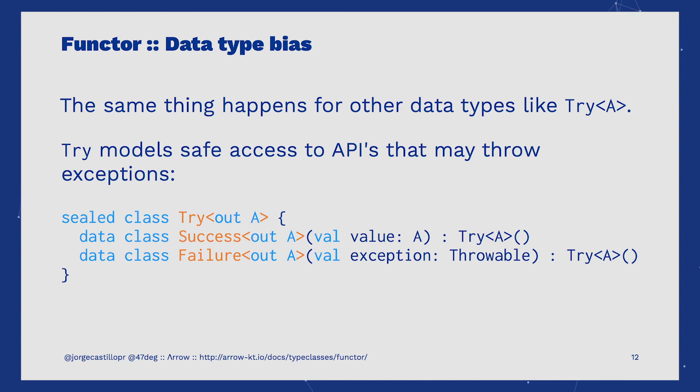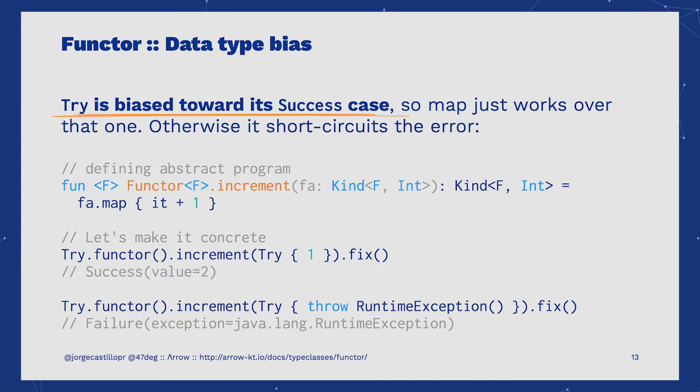Another good example of bias can be Try. Try wraps a computation that might throw exceptions, like an access to an external API. Try is also declared as a sealed class with two different implementations, Success and Failure, reflecting the two possible scenarios returned by a potentially failing computation. Try is biased toward its Success implementation.